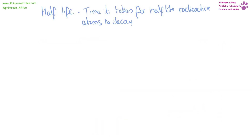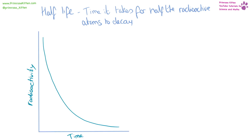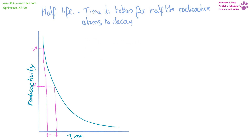A half-life is the time it takes half the radioactive atoms to decay into something else. We can use a graph: take 100% and 50%, read across with a ruler and down, then 50% across and down. The time between an element having 100% activity and 50% activity — or whatever value and half of that value — is going to be the half-life. The half-life of something can range between very quick milliseconds to thousands or hundreds of years.